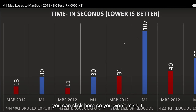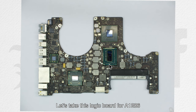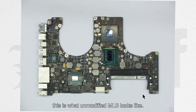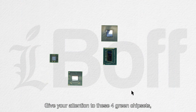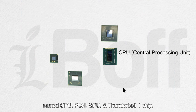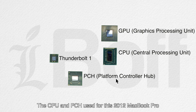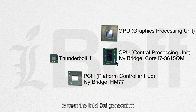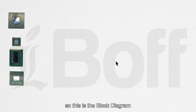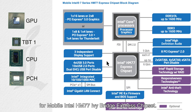Let's take this logic board for a 2012 MacBook Pro as an example. This is what an unmodified main logic board looks like. Give your attention to these 4 main chipsets named CPU, PCH, GPU, and Thunderbolt 1 chip. The CPU and PCH used for this 2012 MacBook Pro is from the Intel 3rd generation Ivy Bridge Mobile Family.